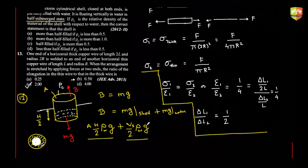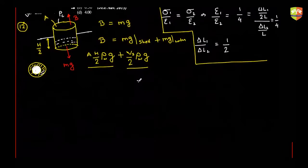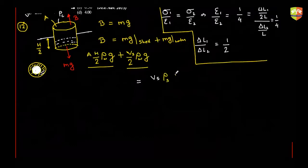This equals the weight of the shell — volume of shell times density of shell times g — plus mg of water inside. If the water inside reaches height x, then A times x is the volume of water inside, so the weight is A times x times rho_water times g.